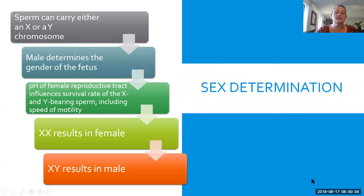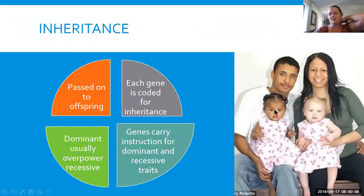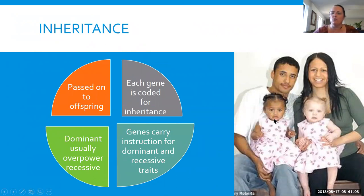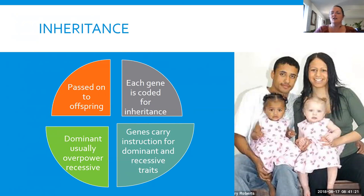Again, this is the sex determination — the male determines the gender, the pH of the reproductive tract can actually influence it, XX makes a female, and XY results in a male. Inheritance is very interesting. Here's a picture of two parents who had twins, and one child ended up looking very much like them, while the other child expressed genetic material from grandparents or even great-grandparents. It's really interesting how genetics passes on — it's not always carbon copies.